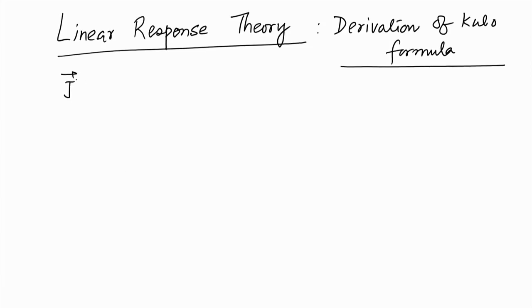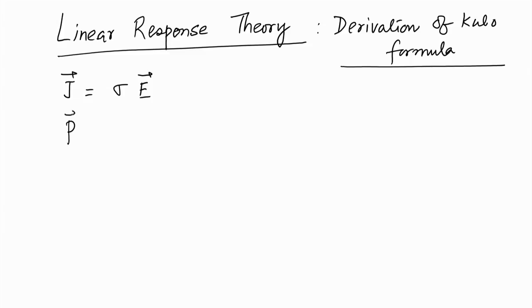What do we mean by linear response? In the presence of an external field, when the system responds to a given external field and when the external field is small in magnitude, there is a linear response that the system exhibits — this is called linear response theory. For example, the current density is given by Ohm's law: J = σE, where J is the current density, σ is the conductivity, and E is the applied electric field, valid for small values of E. Another example is that the polarization can be written as the polarizability times the electric field in a dielectric material.